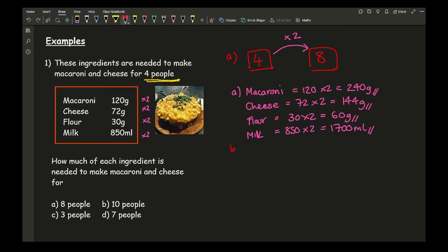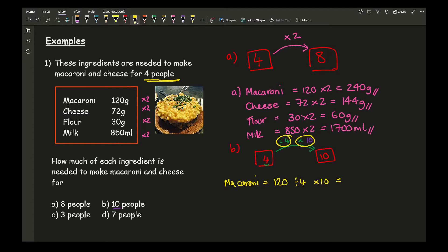For part B we want to get from 4 to 10 people. The typical approach for proportion is to divide by 4 to find the value for one person, then multiply by 10. So for macaroni: 120 divided by 4 times 10 gives 300 grams. For cheese: 72 divided by 4 times 10 gives 180 grams.